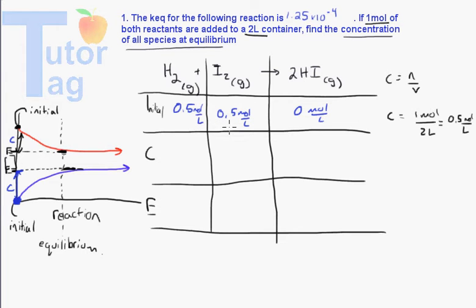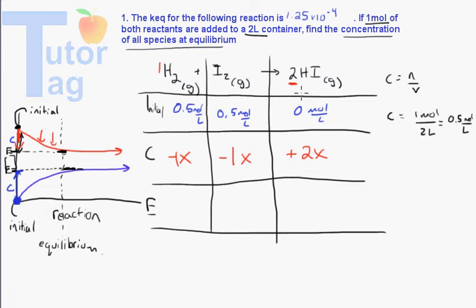There's going to be some change, but we don't know what it is, so we call it X as a variable. From the reactants, we're subtracting that change because they're going down from the initial. There's a coefficient of 1 for H₂ and I₂, so it's minus 1X for each. For HI there's a coefficient of 2, so it's plus 2X. The product gets a plus because it started at zero and has to gain some value. The ratio is one to two, proportional to the stoichiometric coefficients.